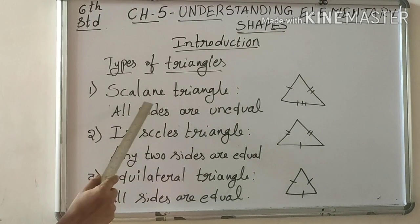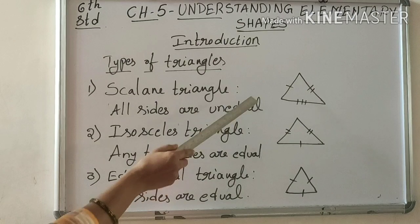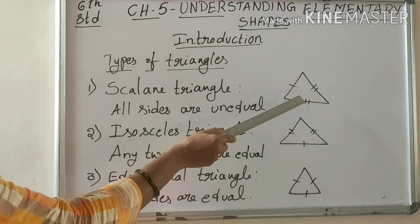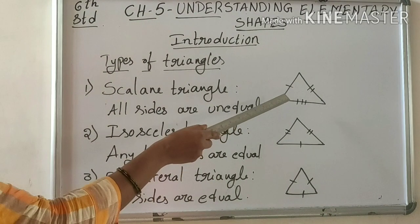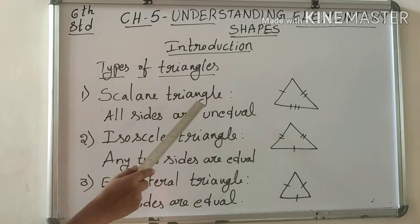First one, scalene triangle. All sides are unequal. That means, triangle mein three sides hota hai. Three sides ki length different hota hai. Then we say that the triangle is called scalene triangle.